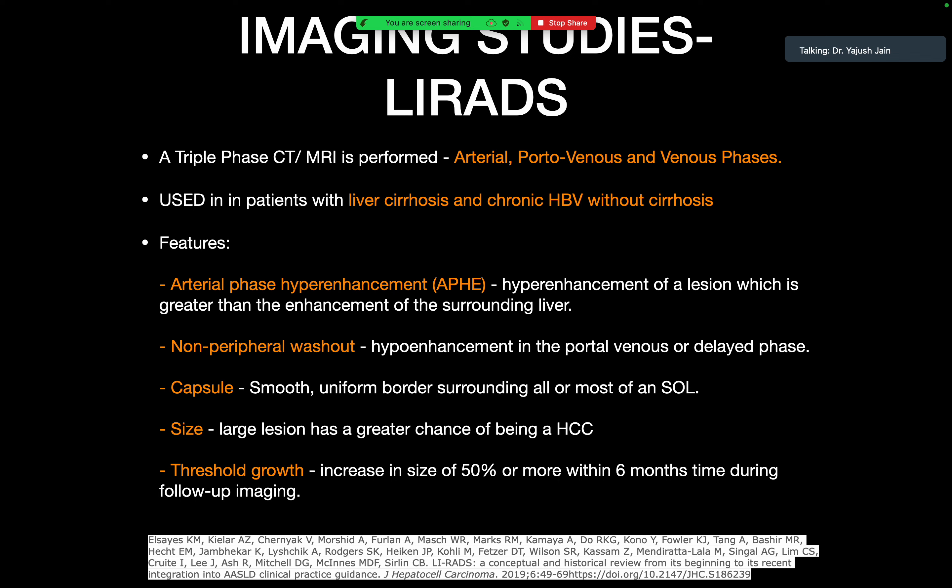In a patient with liver cirrhosis or chronic Hepatitis B infection without cirrhosis, we use LI-RADS criteria rather than directly labeling the lesion as HCC. We describe the possibility of that lesion being an HCC by performing a triple-phase CT or MRI, which has an arterial phase, a porto-venous phase, and a venous phase. Features we study include arterial phase hyper-enhancement (non-peripheral), non-peripheral washout, capsule appearance, size, and threshold or interval growth.